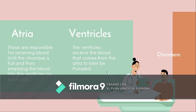The atria are responsible for receiving blood until the chamber is full, and then emptying the blood into the ventricles on each side. The ventricles receive the blood that comes from the atria to later be pumped. The ventricles are much thicker than the atria, as they need an extra layer of muscle to pump the blood at high pressure with each contraction.